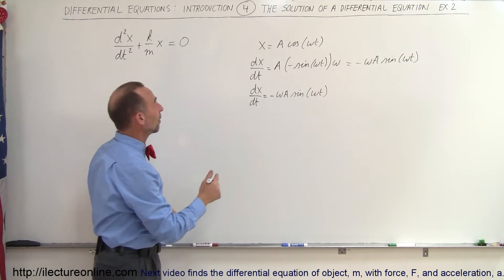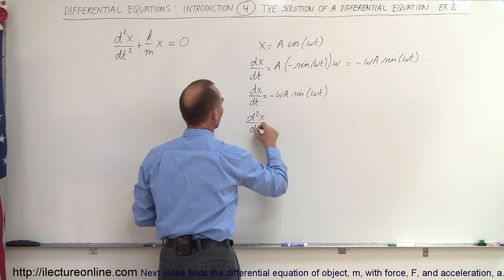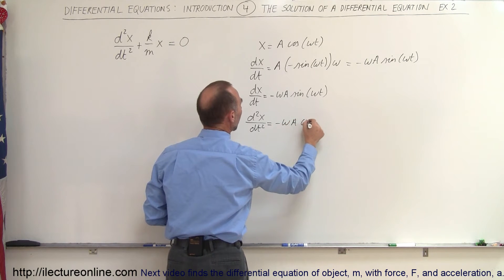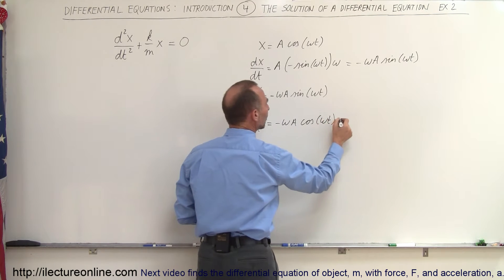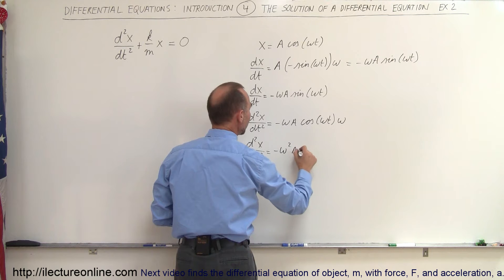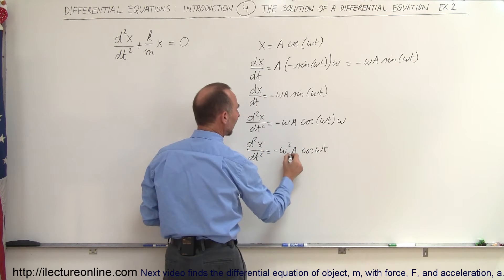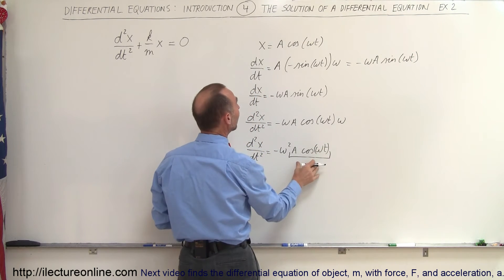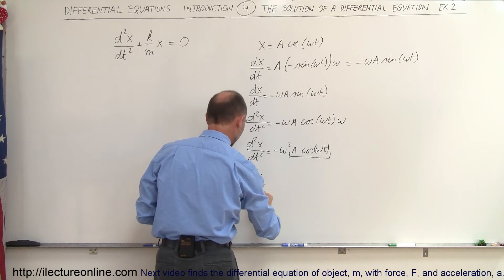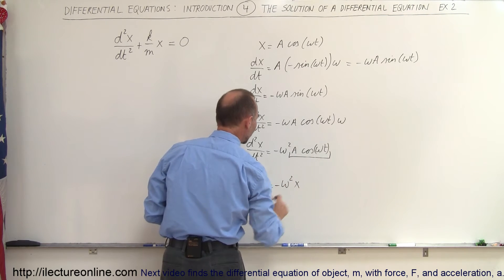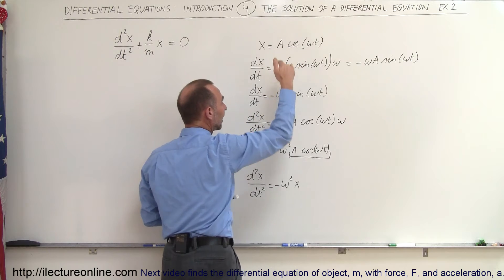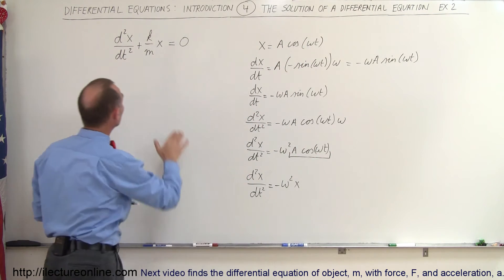If I now take the second derivative, d²x/dt² equals — the derivative of sine is cosine — so we have minus omega times A times the cosine of omega t, times the derivative of the angle which is omega. That means the second derivative of x with respect to time equals minus omega squared times A times the cosine of omega t. Notice that A times the cosine of omega t equals x, which means d²x/dt² equals minus omega squared times x. That's what I mean by taking the second derivative of cosine or sine: you get back the original function, and that's the clue to solving an equation like this.